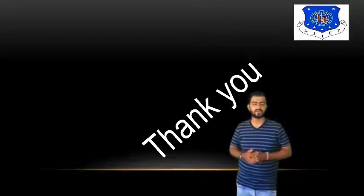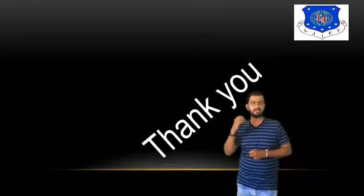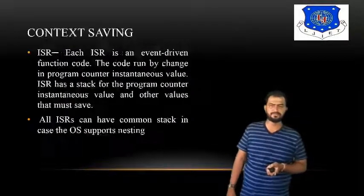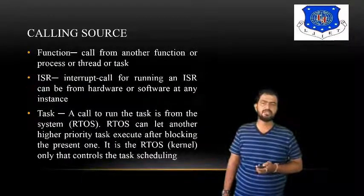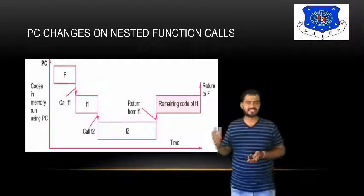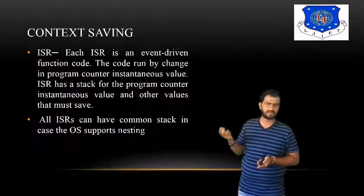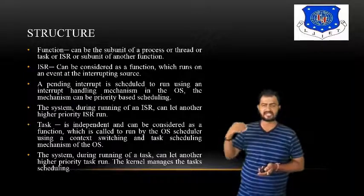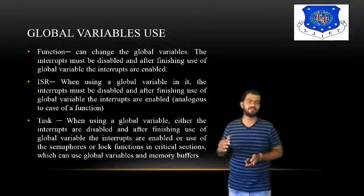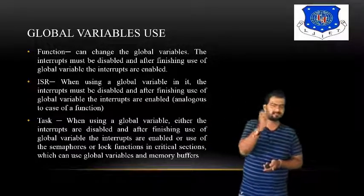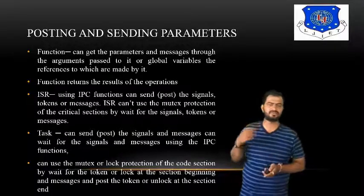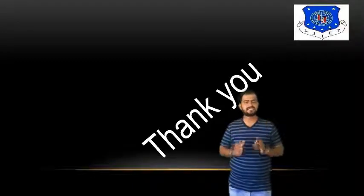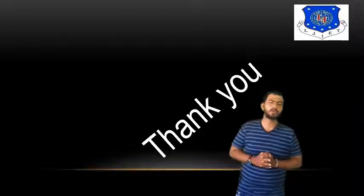In summary, we covered the differences between function, ISR, and task in terms of uses, calling sources, context switching, nested functions, context saving, response and synchronization, structure, and global variable usage — including interrupt enable/disable — and posting and sending parameters. If you have any doubt related to function, ISR, and task, feel free to contact me. Thank you for watching.